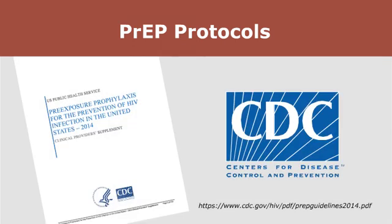CDC guidelines for initiation of PrEP are the same for all people regardless of gender, and several lab tests are required prior to initiation. These include confirmation of HIV-negative status, pregnancy testing, hepatitis B and C testing, serum creatinine or estimated creatinine clearance, and screening for other STIs. There are also no differences in recommended routine follow-up monitoring based on gender. At one month, recommended follow-up includes testing for newly acquired HIV infection and counseling about side effects and adherence. After that, follow-up every three months includes HIV testing, a pregnancy test, and counseling about risk reduction and adherence. Follow-up monitoring for creatinine clearance and STI testing is recommended every six months.